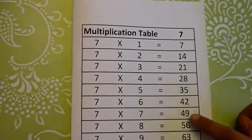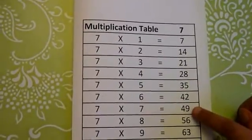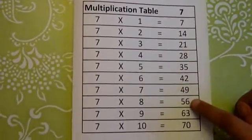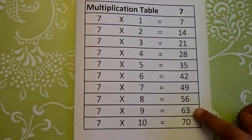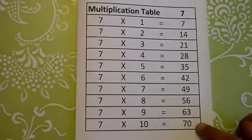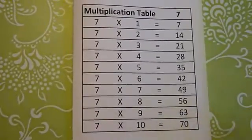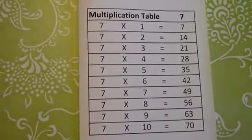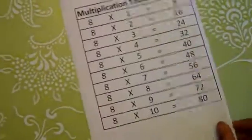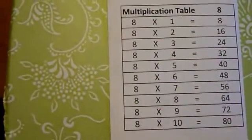7 6s are 42, 7 7s are 49, 7 8s are 56, 7 9s are 63, 7 10s are 70. Next we're going to go on to multiplication table 8.